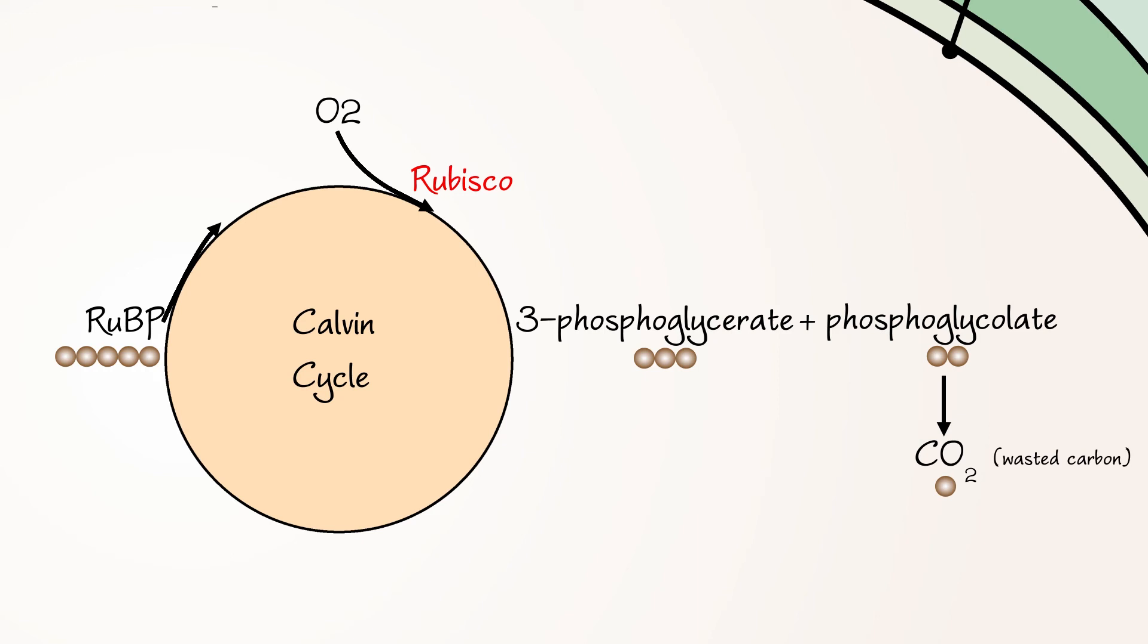Due to insufficient carbon in the Calvin cycle, glyceraldehyde 3-phosphate cannot be produced. However, the cycle does continue and ribulose bisphosphate is regenerated.